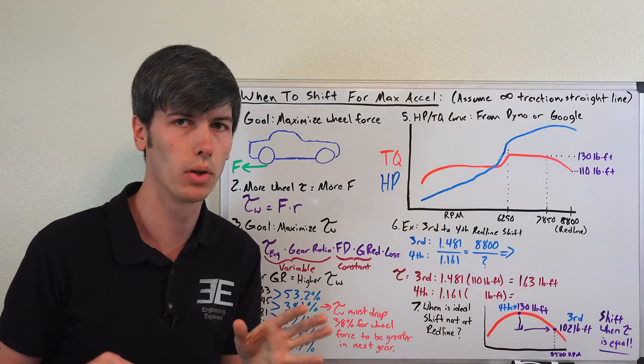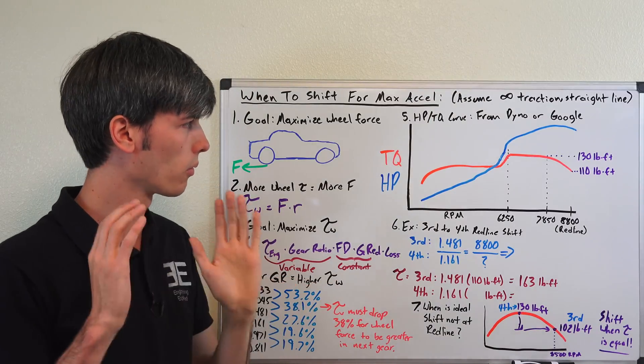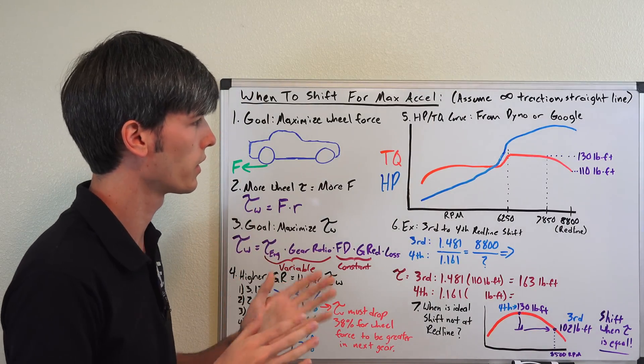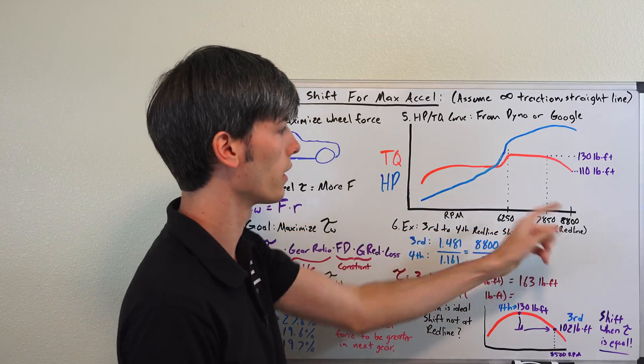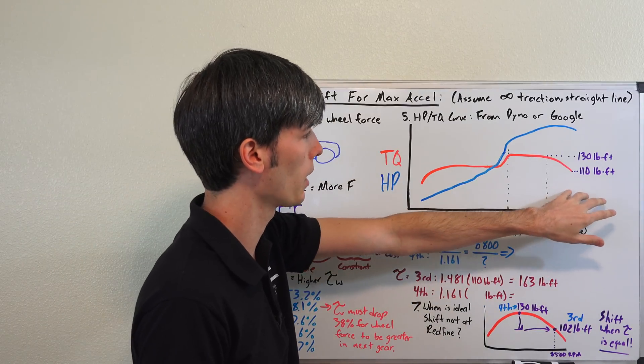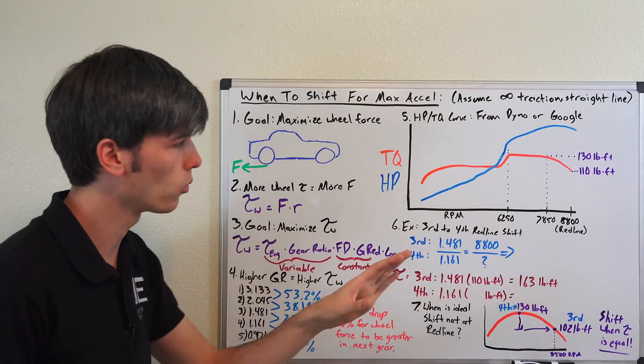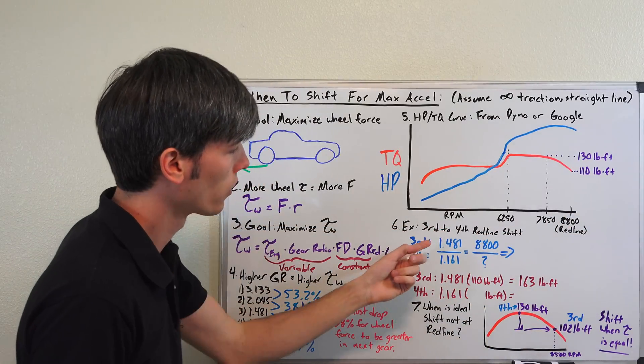So our example, we're going to be in third gear, we're going to be going flat out, and we're going to want to know should we have shifted at 8800 RPM, which is redline. So we're going to shift to 8800 RPM, and then we're going to do the math, and decide whether or not that was a good idea.